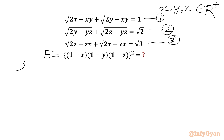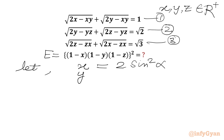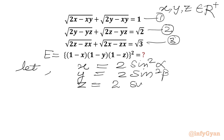Now we are going to use our substitution straight away. Let us say x equal to 2 sin² α, y equal to 2 sin² β, and z equal to 2 sin² γ.